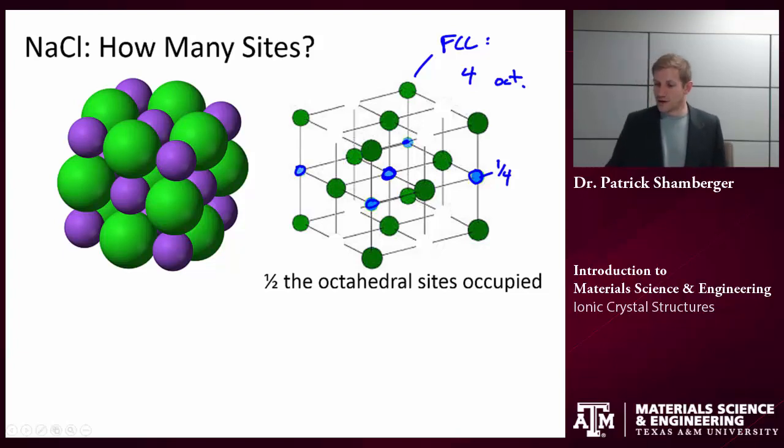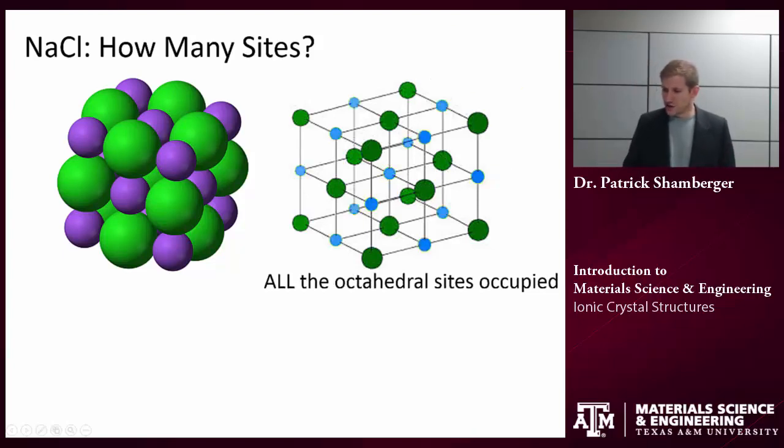These are two available sites, that's half of the sites. That's one potential configuration. Or we could think about maybe it's occupying all the sites. So how do we figure this out?